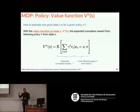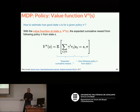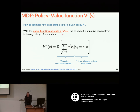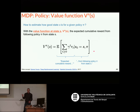I'll give you a few definitions, then go back to how to find the optimal policy. First definition: the value function. The value function tells you how good a state s is for a given policy pi. This value function is the expected cumulative reward from following policy pi from state s — it's the expected cumulative reward with a discount factor, starting from this current state and following this policy. This V tells you how good the state is for a given policy.